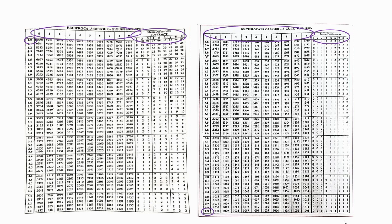The only difference when using the reciprocal table is that the mean difference has to be subtracted. At the top of the mean difference column it is mentioned that mean difference has to be subtracted. So while using the reciprocal table, remember: we have to subtract the mean difference.